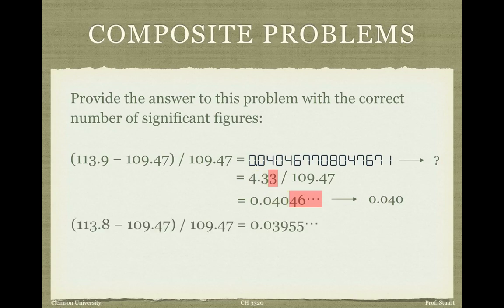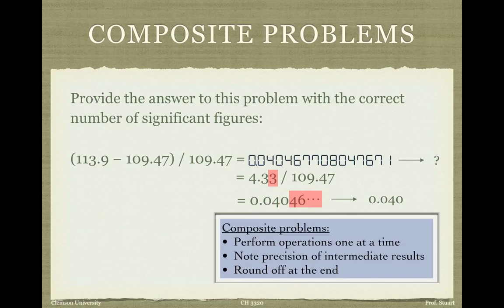If you don't trust your answer, you can always perturb your inputs in the last digit and see the effect on the output. Doing the same problem with 113.8 instead of 113.9, the calculator answer begins to differ in the second digit — confirming that the second digit is the last one we can keep. The keys for composite problems: perform operations one at a time, note the precision of your intermediate results after each step, keep all digits in your calculator, but track how many are significant so you know how many to round off at the end.